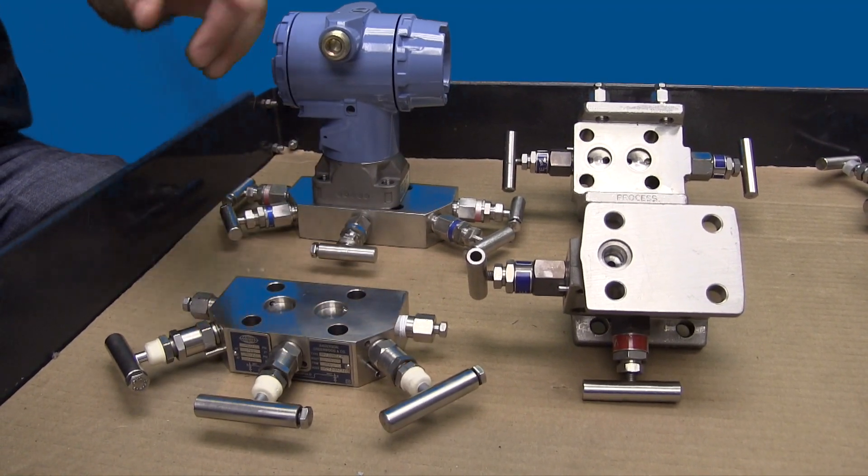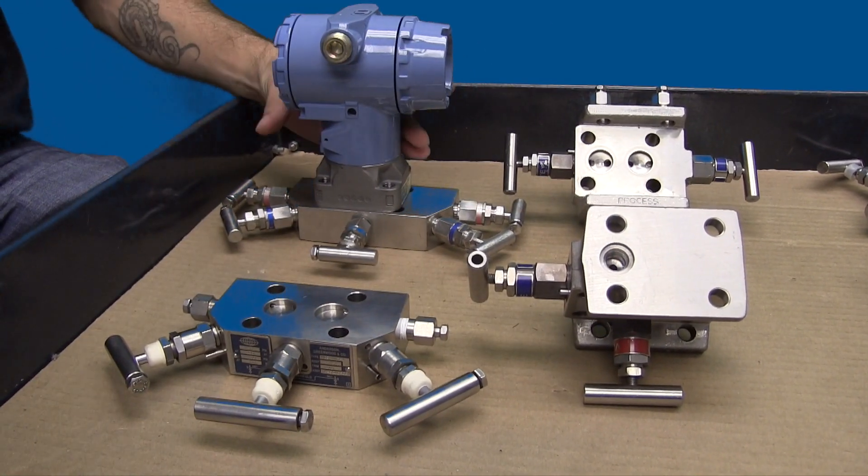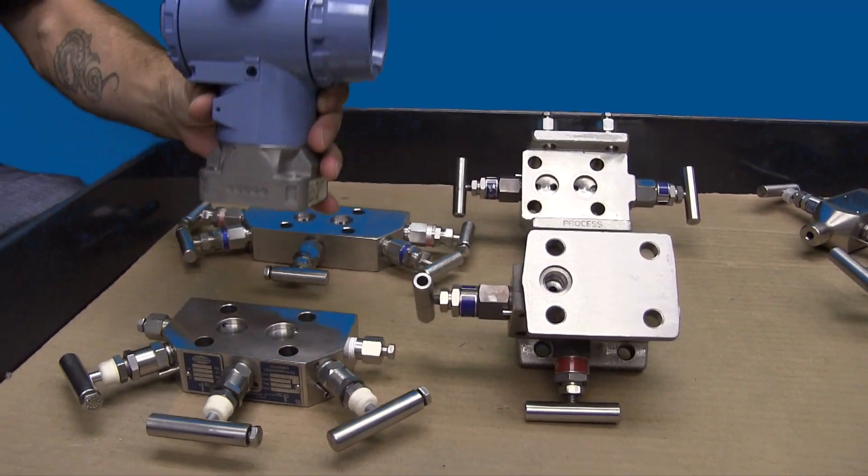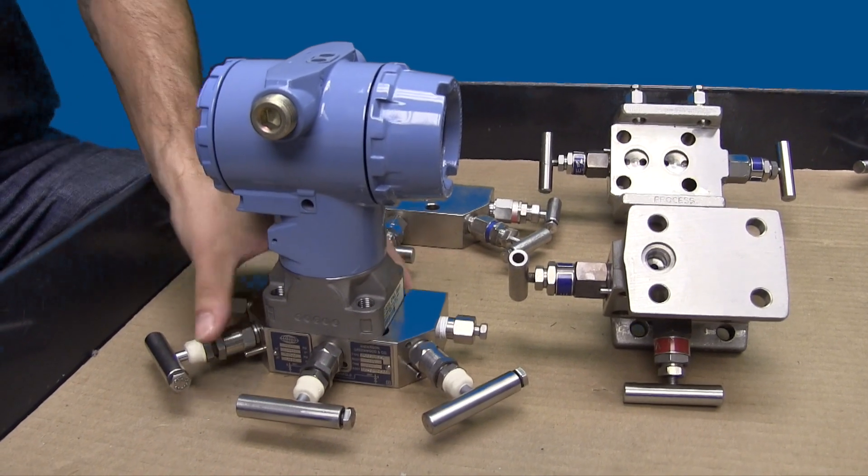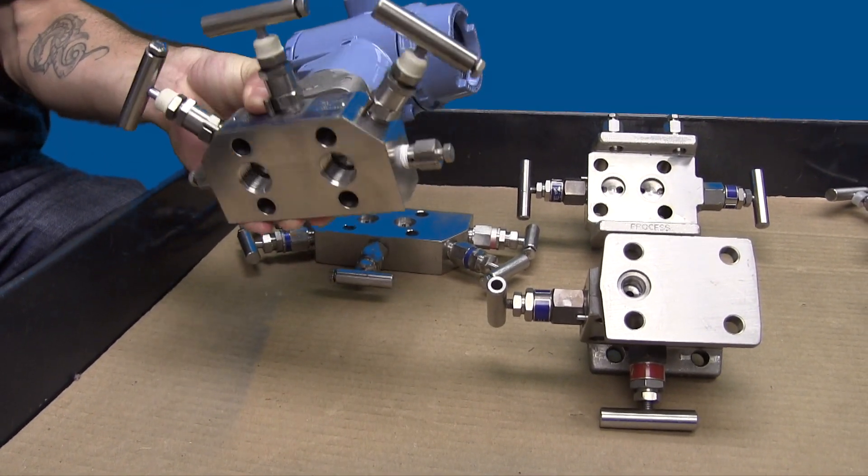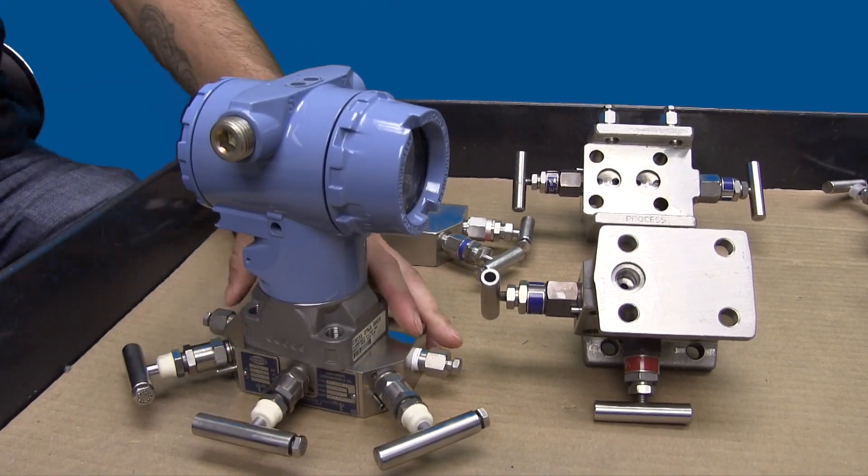Traditional manifolds have the process connection coming in from the side of the manifold. Alternatively, coplanar style manifolds have the process connection coming in from the bottom. These are both available in half-inch and quarter-inch process connection sizes.